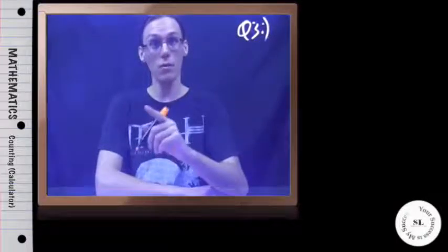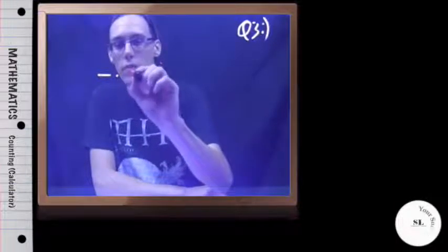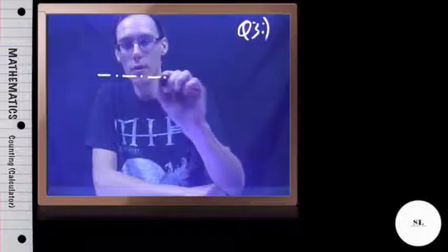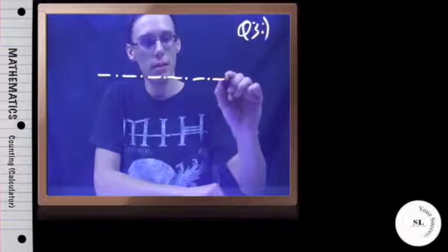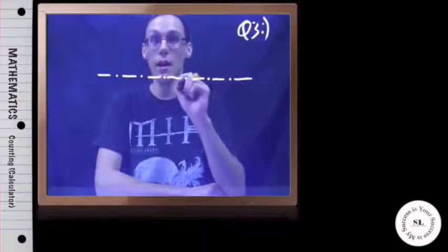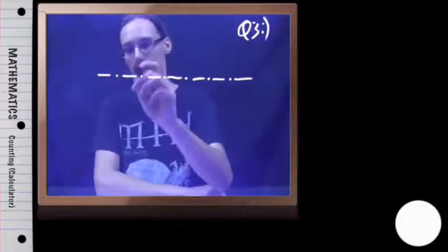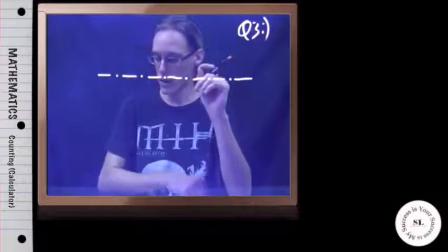It says, in how many ways can seven airplanes... so we've got seven airplanes in seven positions: one, two, three, four, five, six, and seven. And you may be tempted to just say, well, I've got seven choices here and six. Careful, finish reading it.